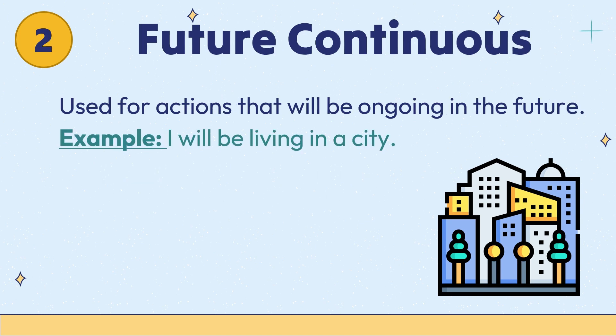Second is future continuous. Used for actions that will be ongoing in the future. For example: I will be living in a city.